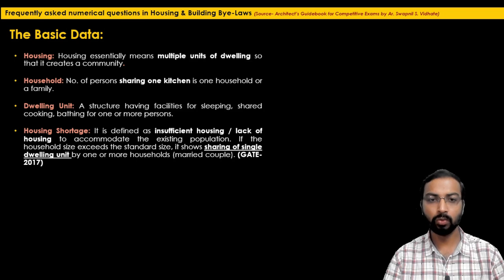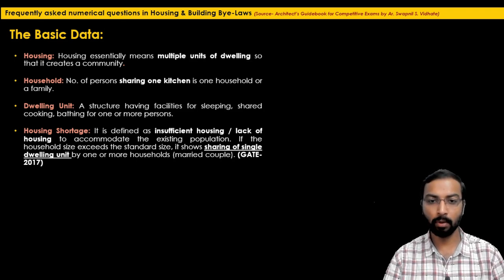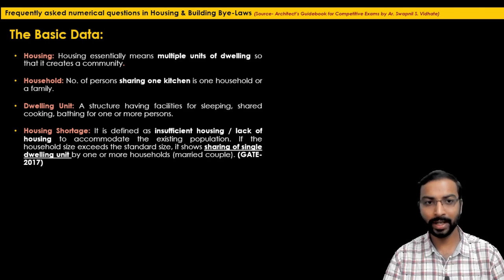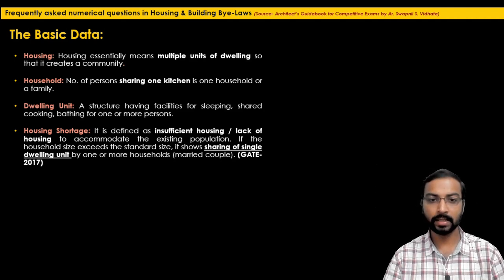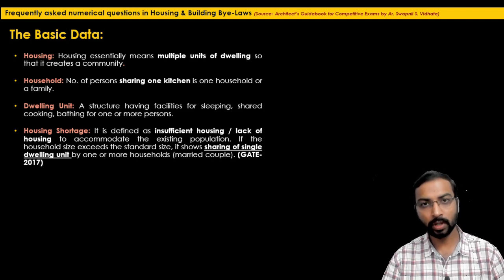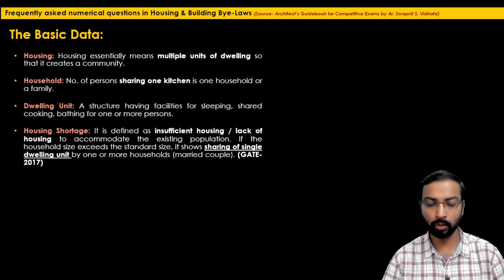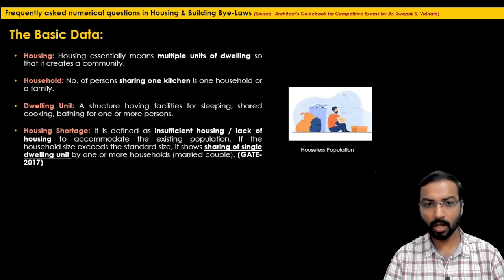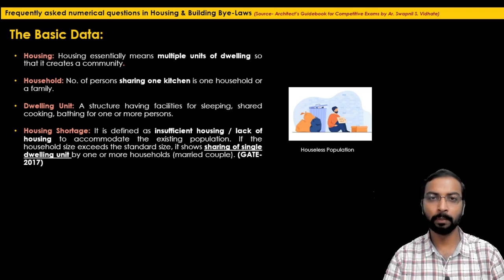Housing shortage is defined as insufficient housing or lack of housing to accommodate the existing population — meaning people staying on roads or footpaths with no roof above their head. Apart from that, if the household size exceeds the standard size, such as one or more married couples sharing a single dwelling unit, that is also considered housing shortage. Housing shortage includes the houseless population as well as slum conditions where more than one family lives in a single dwelling unit.